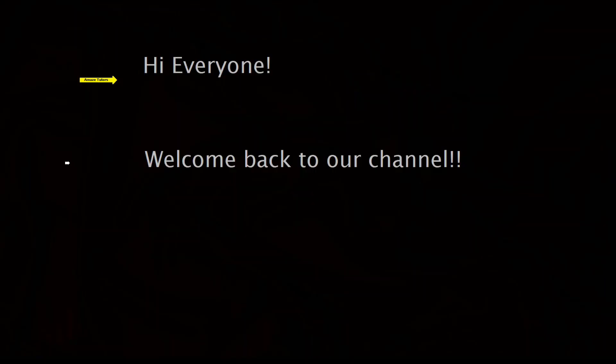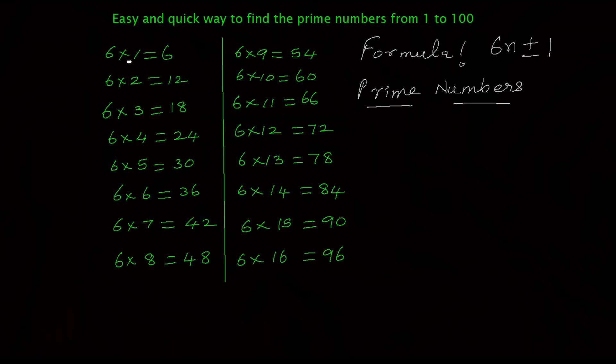Hello everyone, welcome back to our channel. Today I am going to show you an easy and quick trick to find the prime numbers between 1 to 100. It's really easy. For this you need the six times table or multiples of 6 from 1 to 16: 6×1=6, 6×2=12, 6×3=18.